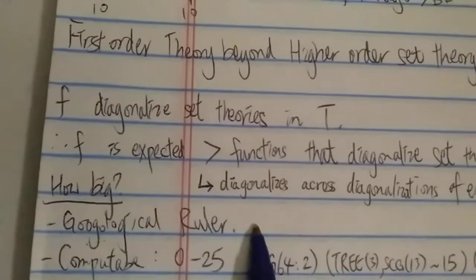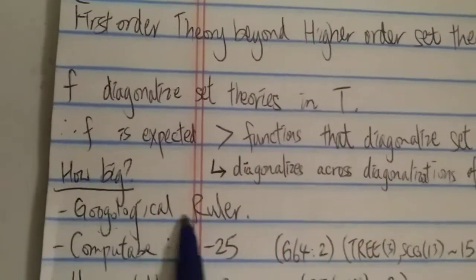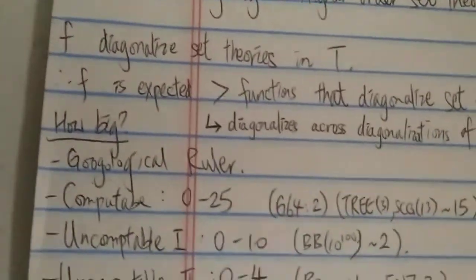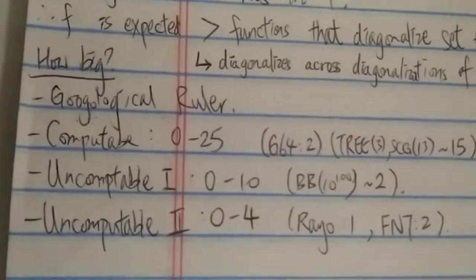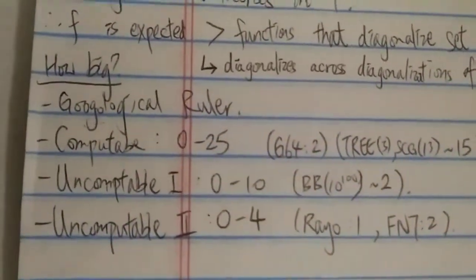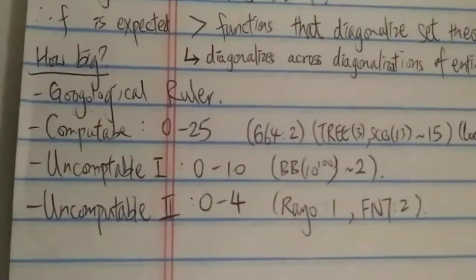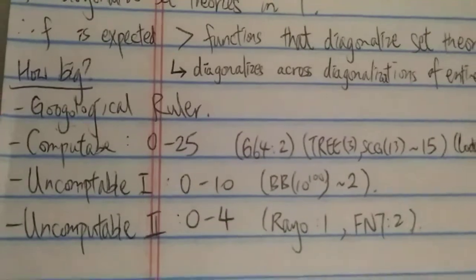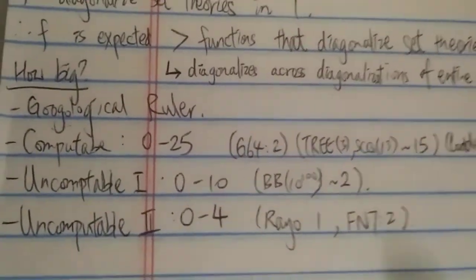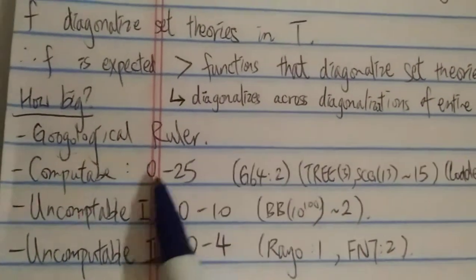So basically, how big is it? So actually, there is something called the Googleology ruler or something like that. You can look it up yourself. Basically, it's kind of like a big number ruler or measurement of big number, similar to the fast-going hierarchy, but not for the fast-going function, but for the size of big numbers.